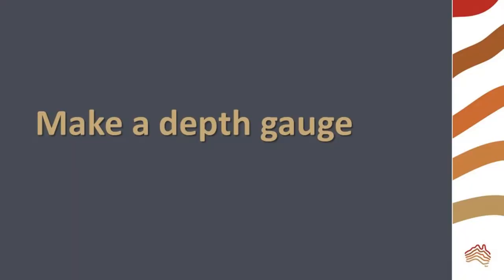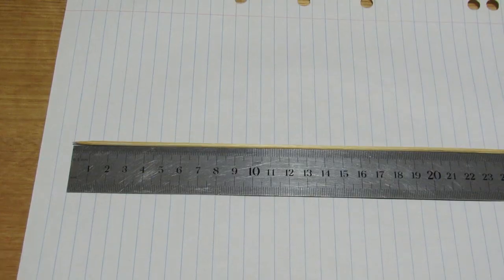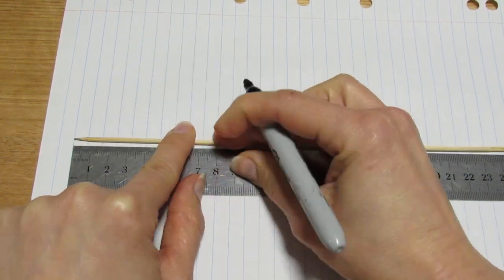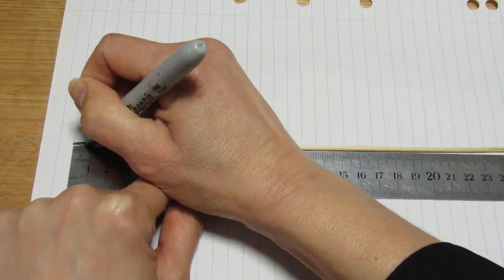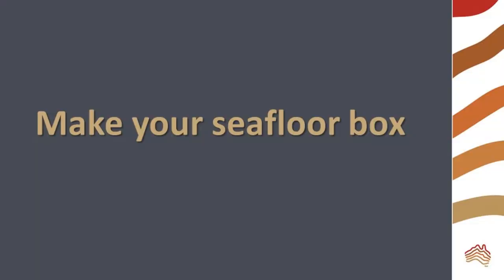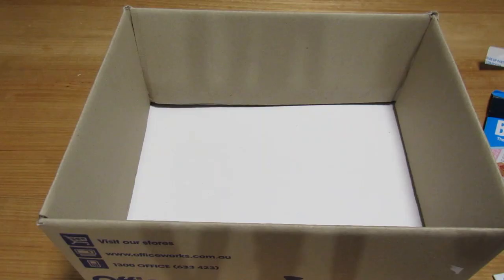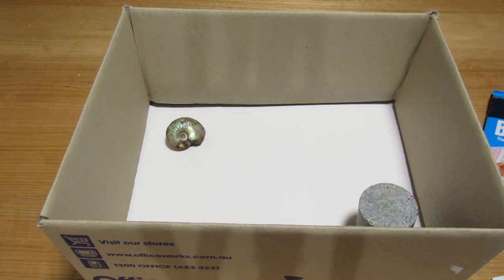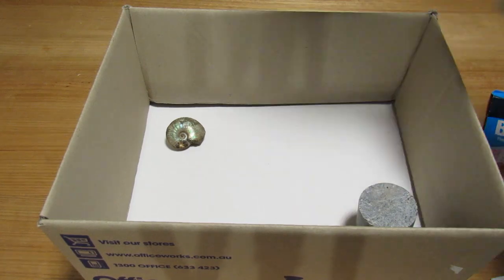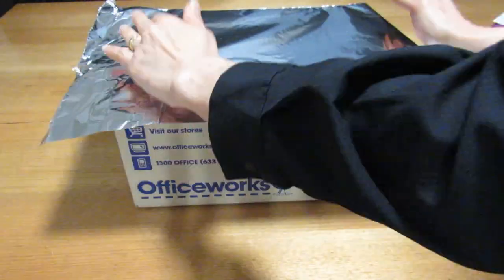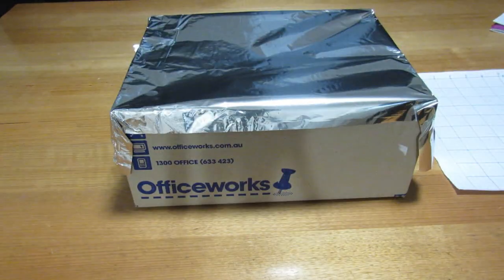Now make your bamboo skewer into a depth gauge. Color in alternating centimeters, being sure to go a bit further than the depth of the box. When making your seafloor box, you may want to use blue tack to hold your items in place. If they move when you push in the sticks, you will have a difficult time mapping.